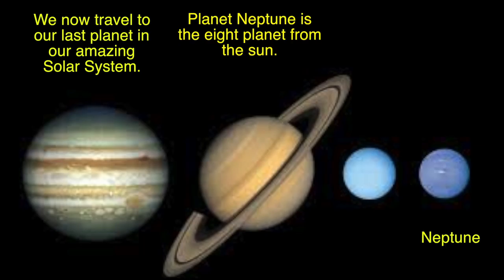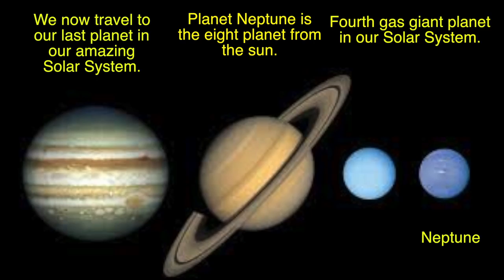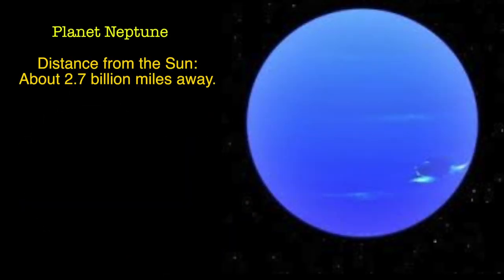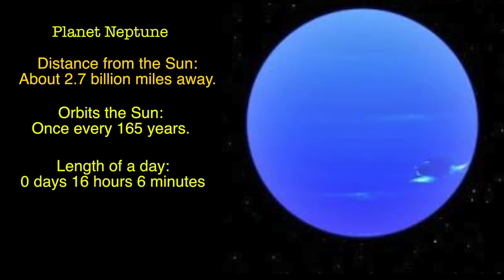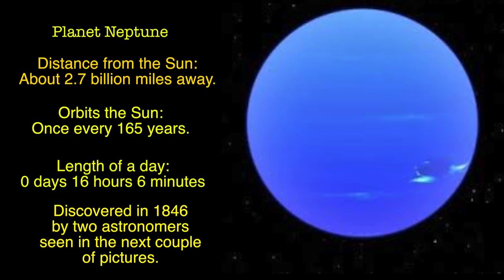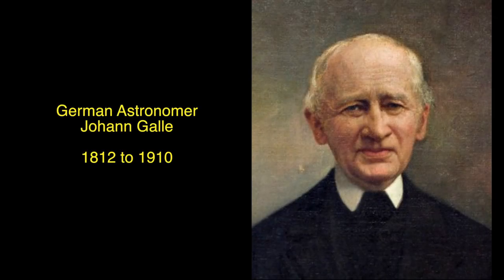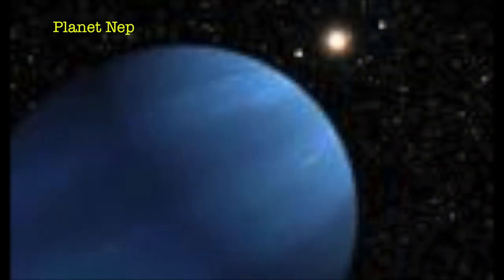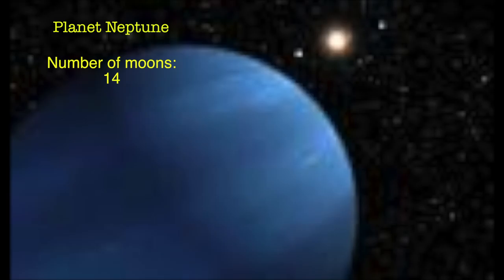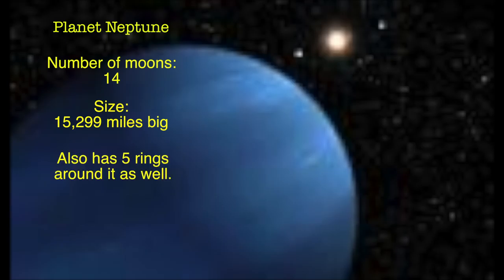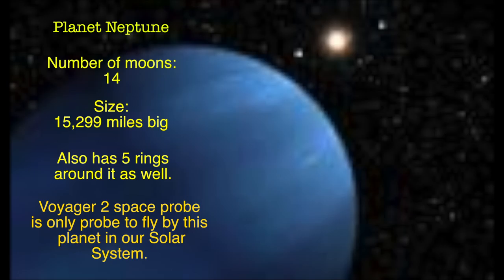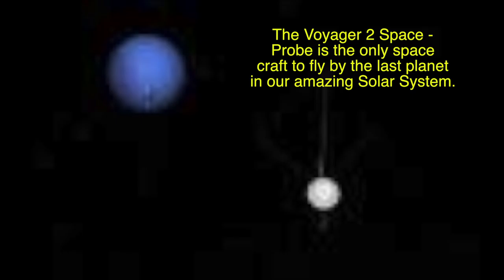We now travel to our last planet in our amazing solar system, Neptune. Planet Neptune is the 8th planet from the sun and the 4th gas giant. It is about 2.7 billion miles from the sun and orbits the sun once every 165 years. Length of a day: 16 hours and 6 minutes. Discovered in 1846 by French astronomer Urbain Le Verrier, mathematician, 1811–1877, and German astronomer Johann Galle, 1812–1910. Neptune has 14 moons and is 15,299 miles big. It also has 5 rings around it. The Voyager 2 space probe is the only spacecraft to fly by this planet, which happened in 1989.